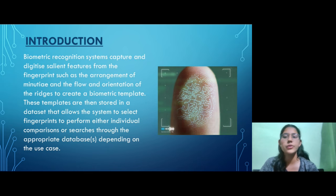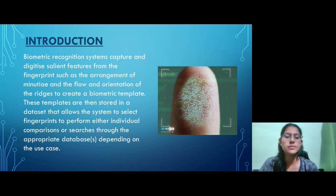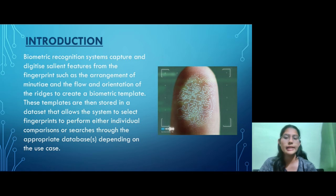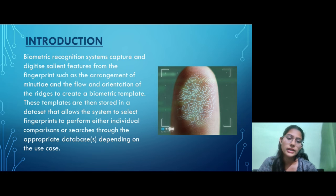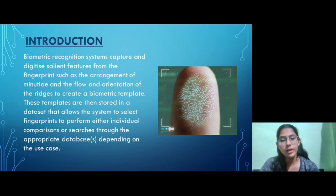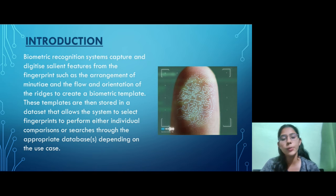So what is a biometric system? A biometric system captures the salient features from our fingerprint and then creates a biometric template. These templates are then stored in a dataset that allows the system to select fingerprints to perform either individual comparison or searches through the appropriate databases, depending upon the case.